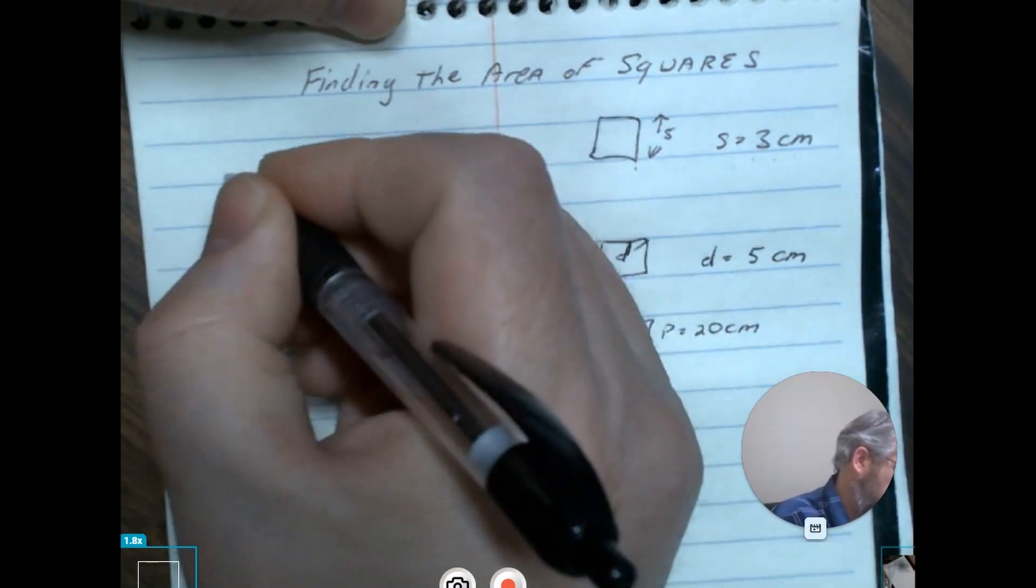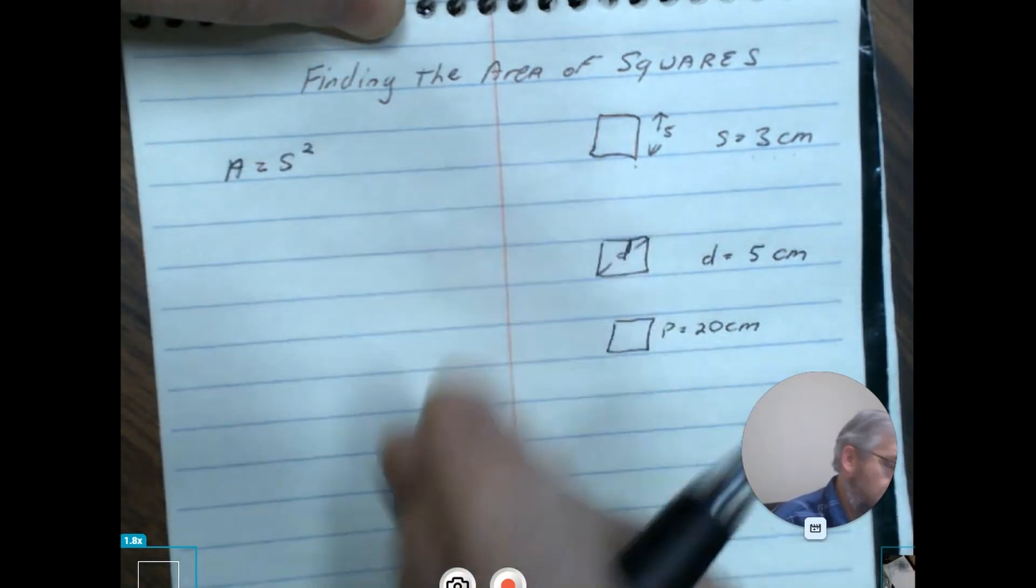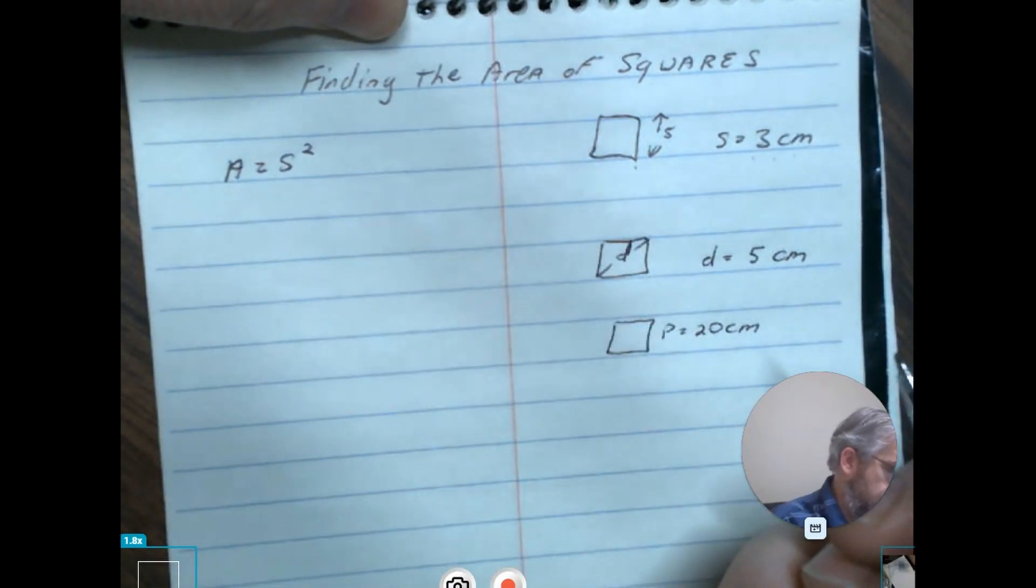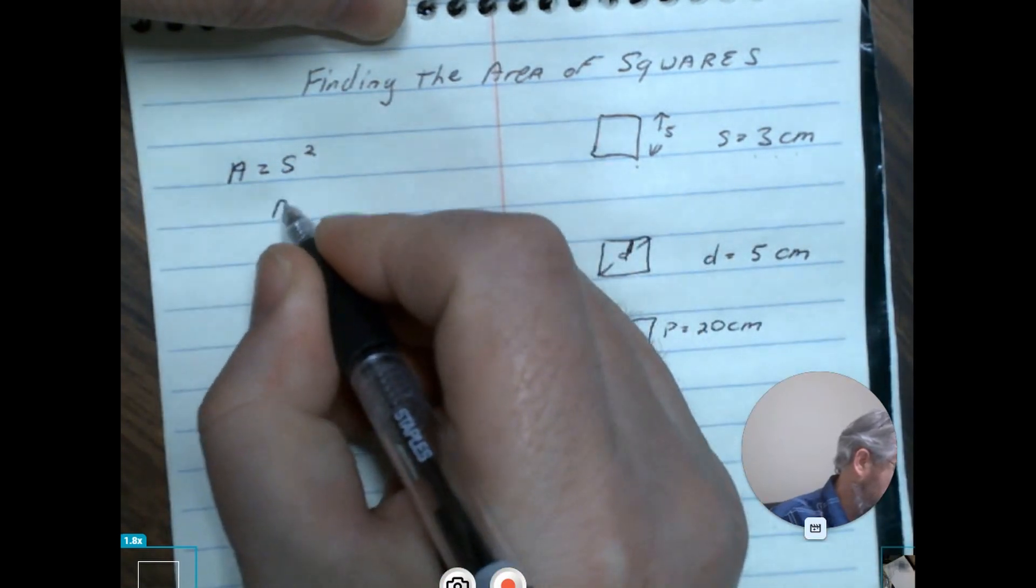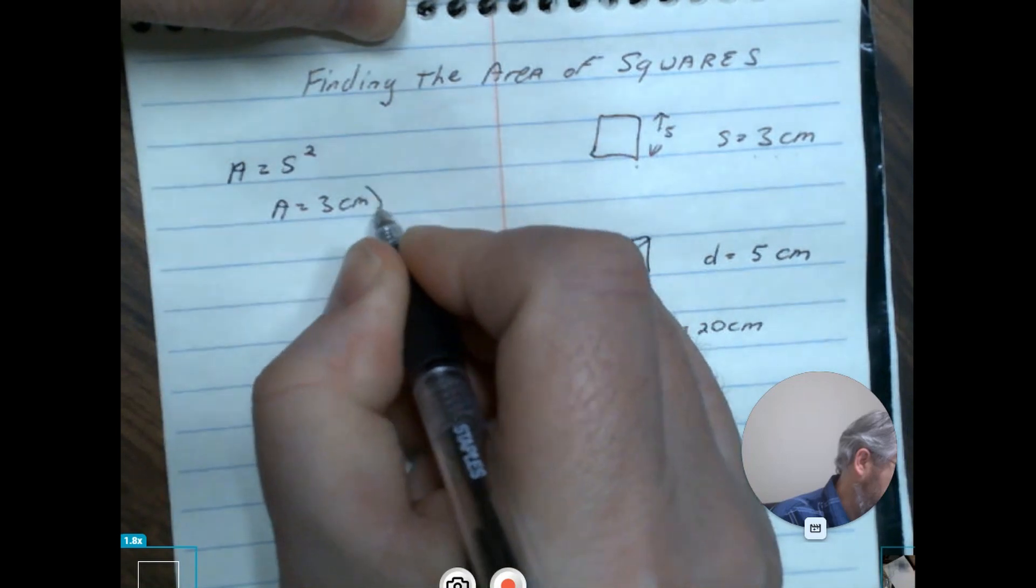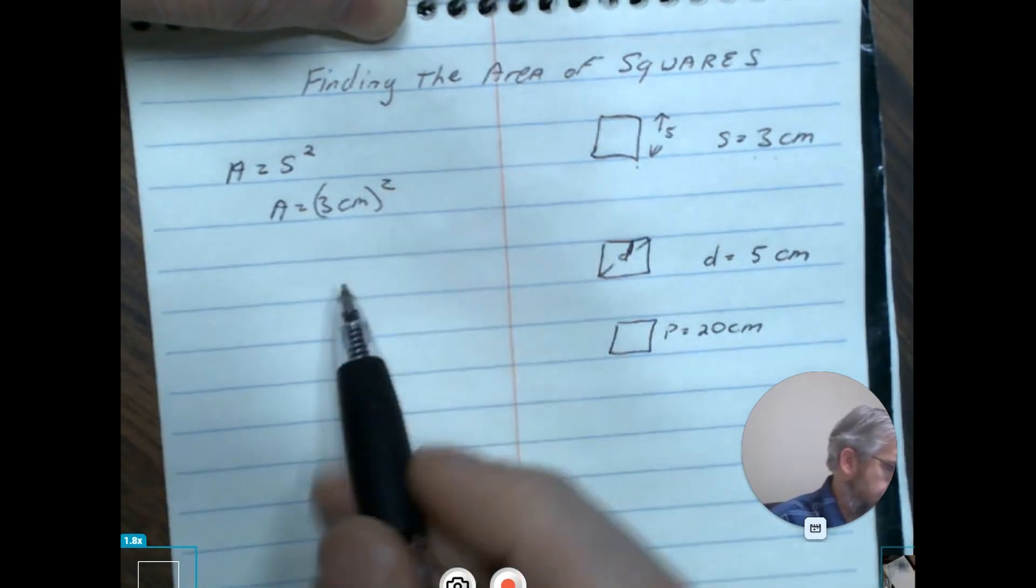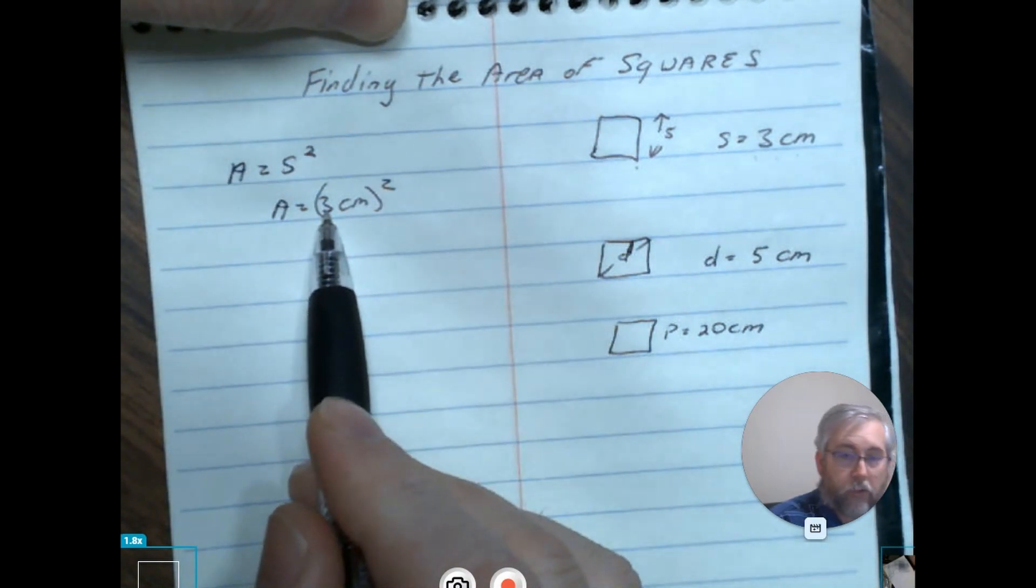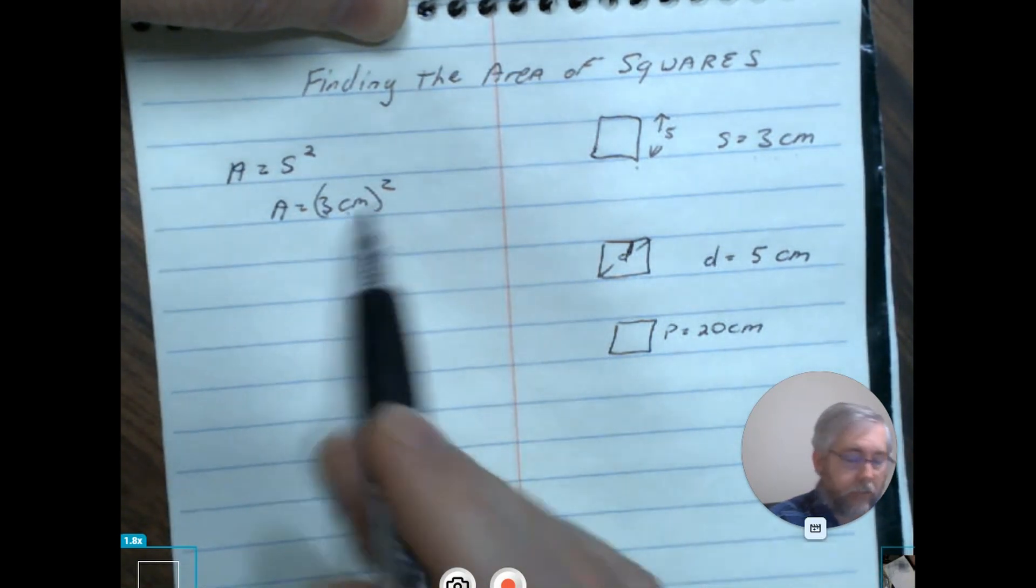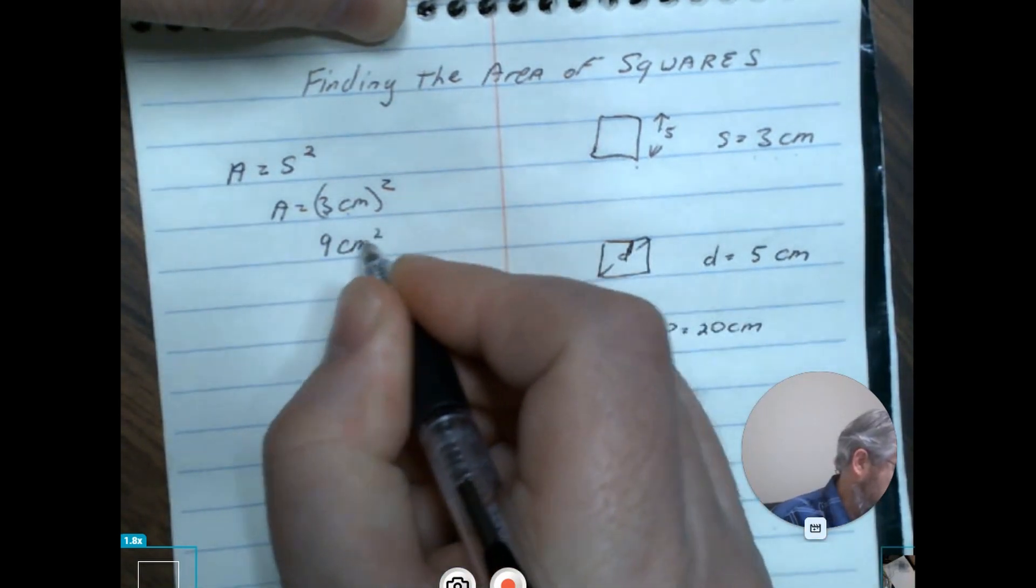In this case, we're going to use the formula A equals s squared, or side squared, to find it. We'll go ahead and plug in our number: A equals three centimeters squared. By doing that, essentially you're saying three times three, and you're also saying centimeters times centimeters. So then our answer is going to be nine centimeters squared for this particular answer.